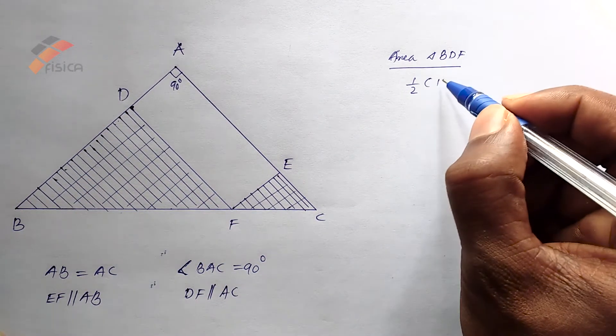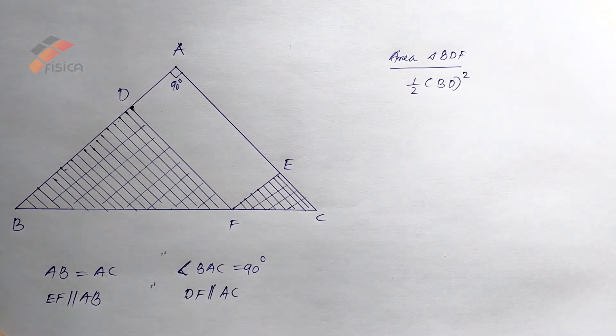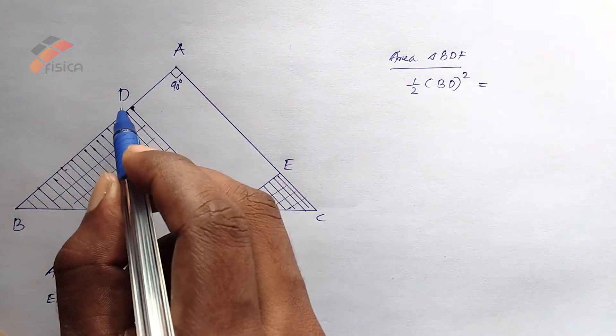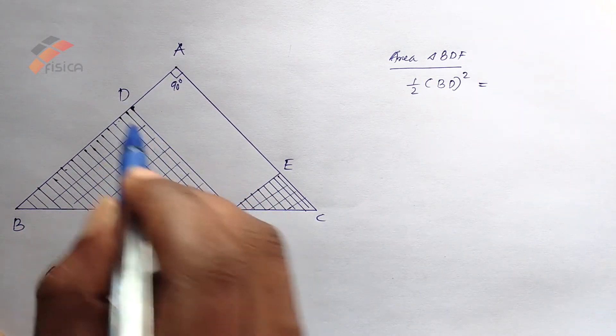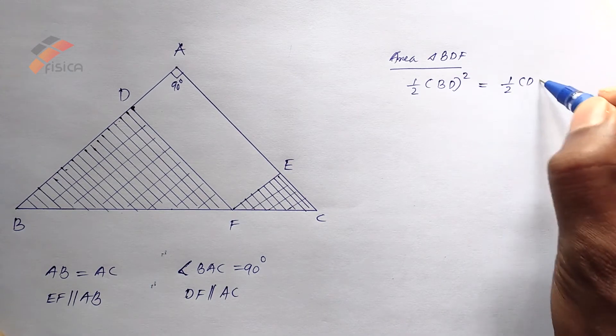Half into BD squared. This is equal to BD equals DF. So this is equal to half DF squared.